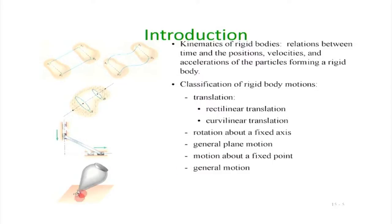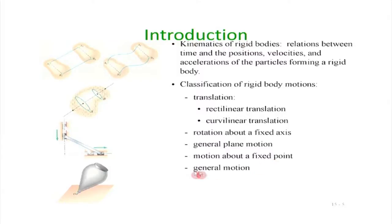That is the most general motion in 2D. In 3D we can also have motion about a fixed point — for example, spinning of a top. These 3D motions require more visualization and are beyond the scope of what we are doing now. In today's lecture we are going to focus on rotation about a fixed axis and general plane motion.